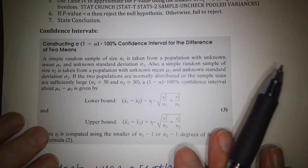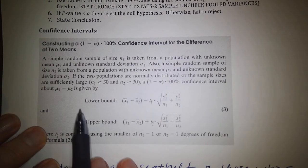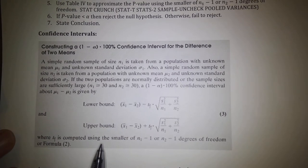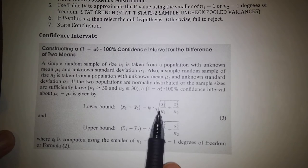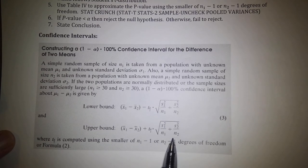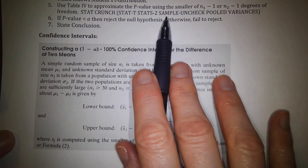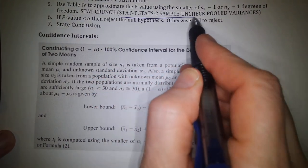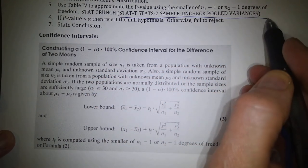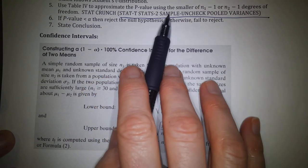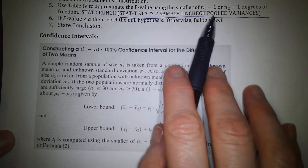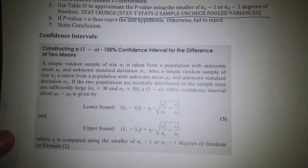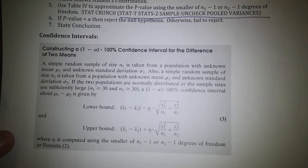We'll also do a confidence interval using the same structure: lower and upper bounds from the point estimate plus or minus the margin of error. In StatCrunch, use T-stats two-sample, and make sure you uncheck pooled variances — I'll show you how to do that.